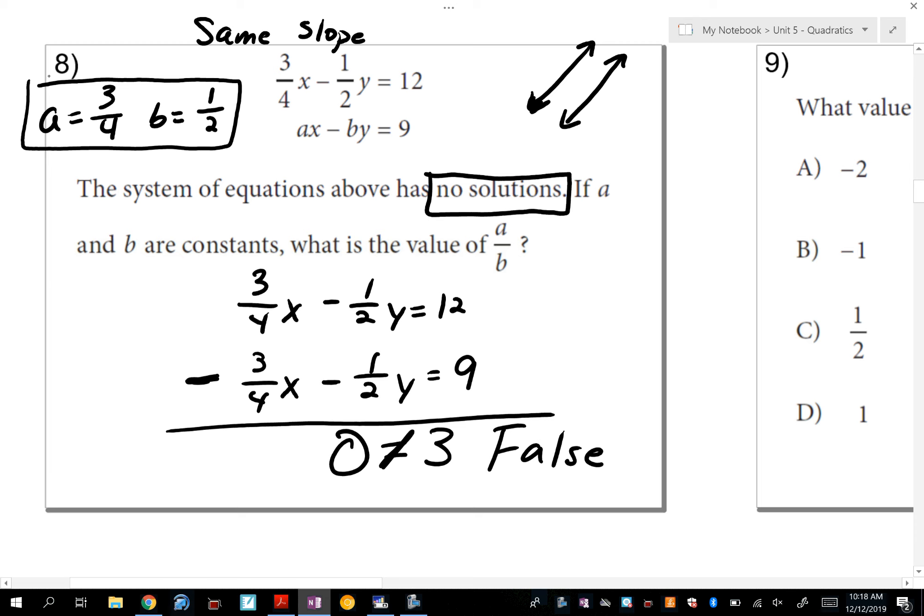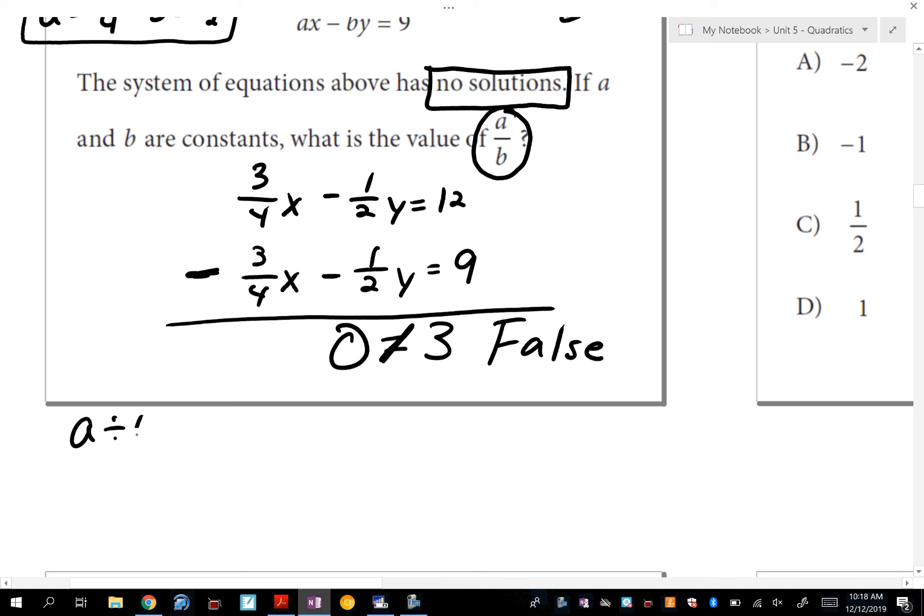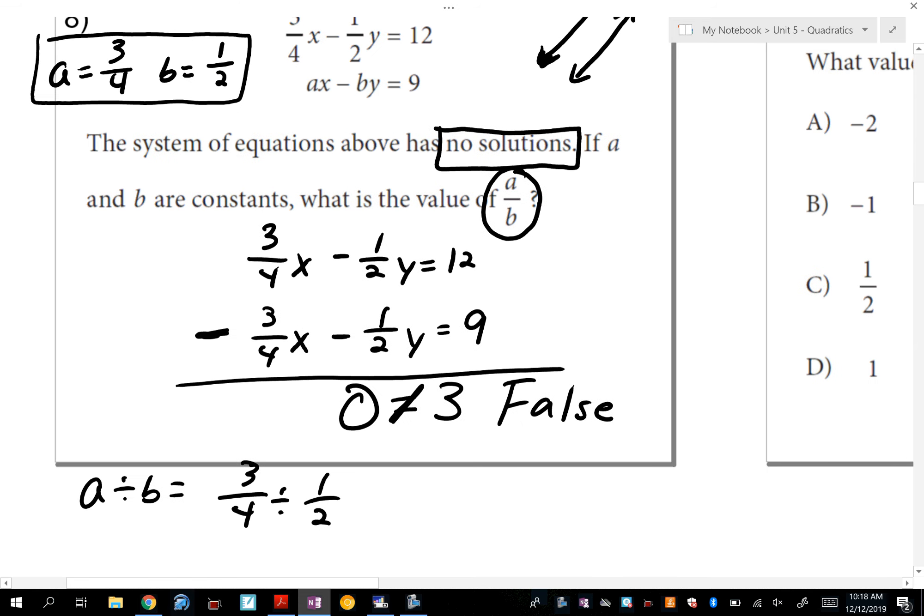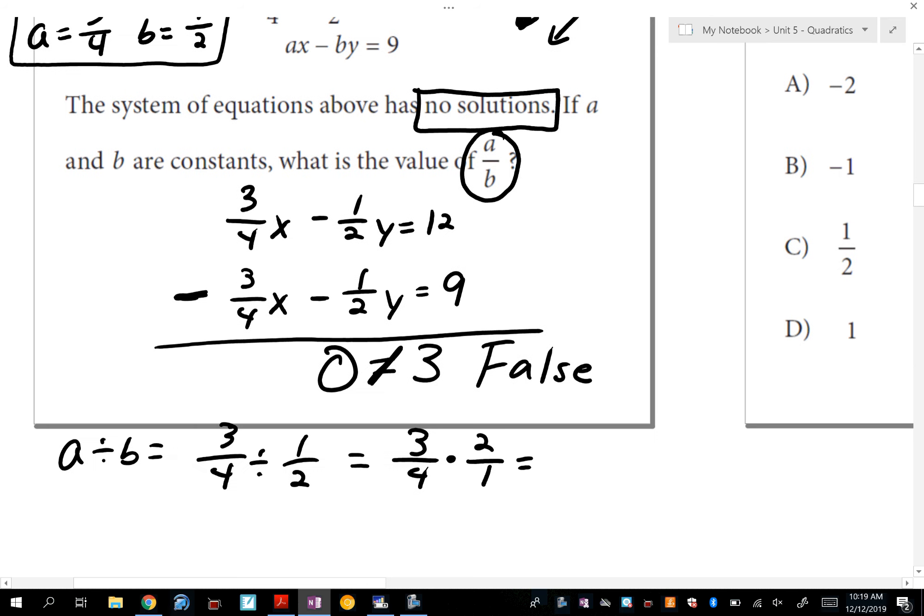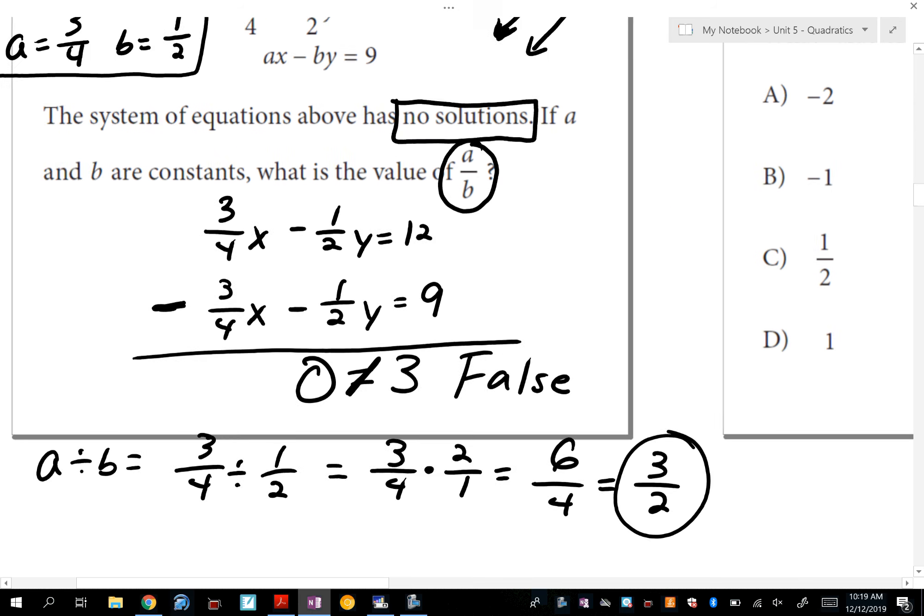Zero is not equal to 3. So basically, I have found what a and b are equal to. But as you know, the SAT is hashtag extra, and they want to know not just what a is or what b is, they want to know what a divided by b is. So you have to do a little bit more work for a divided by b. So that's three-fourths divided by one-half. Again, I'm using the numbers up there, three-fourths of one-half. That's going to be multiplying by the reciprocal. And three-fourths times 2 is six-fourths or three-halves. So the answer for this is going to be three-halves. That was a lot to do there.